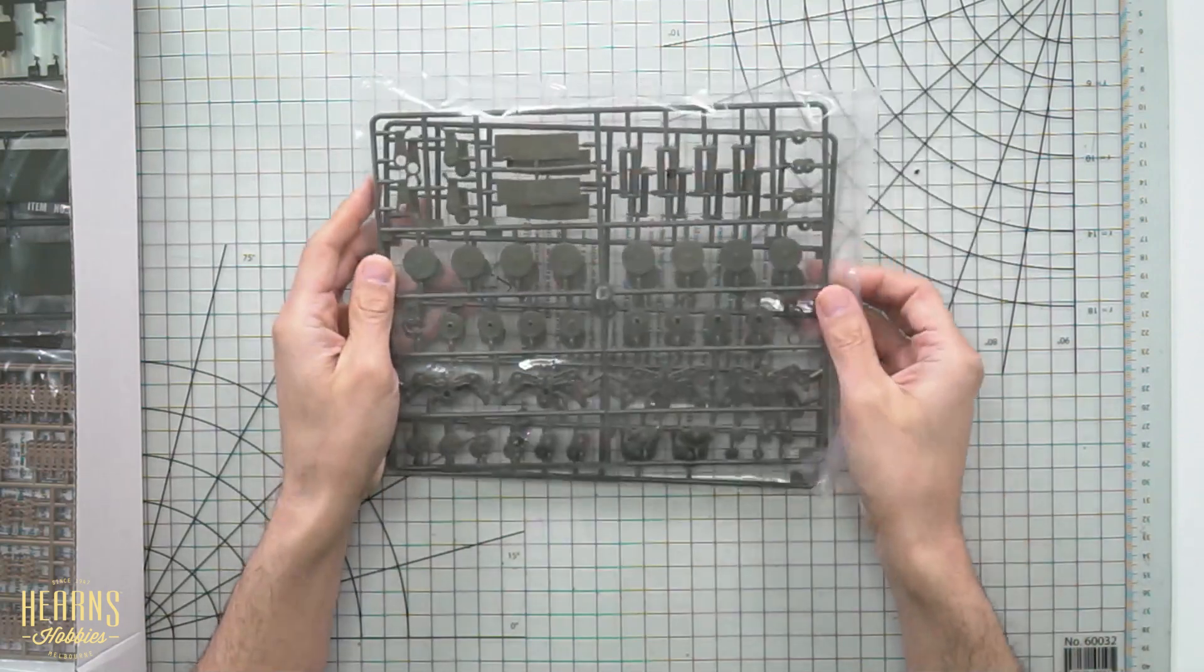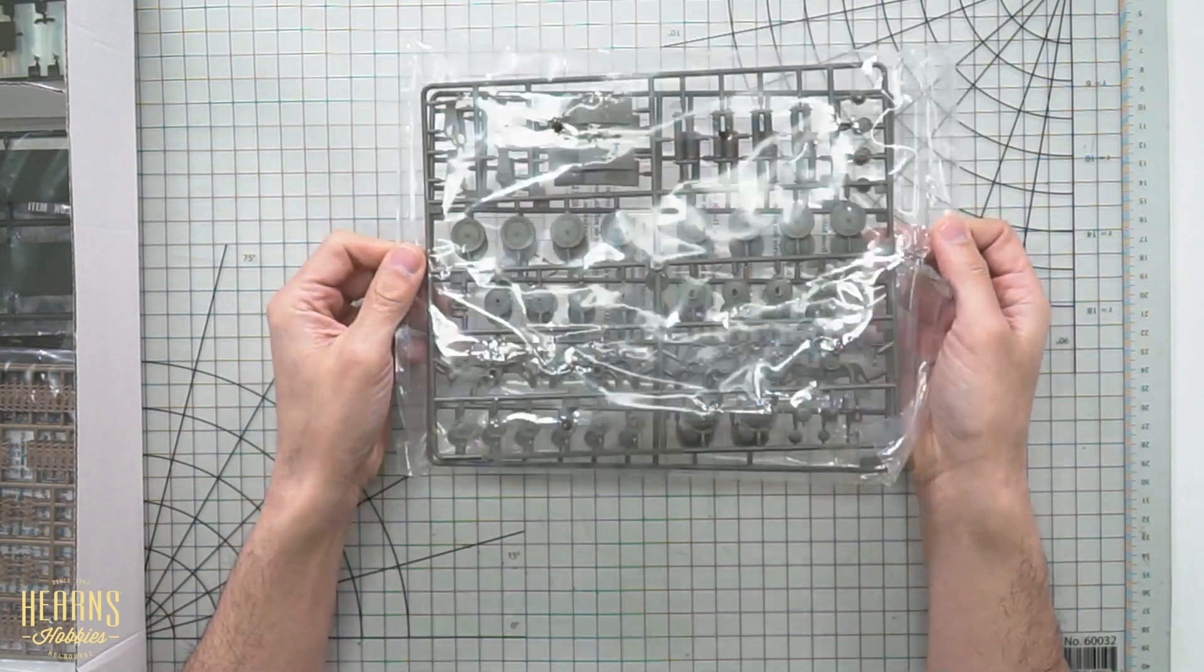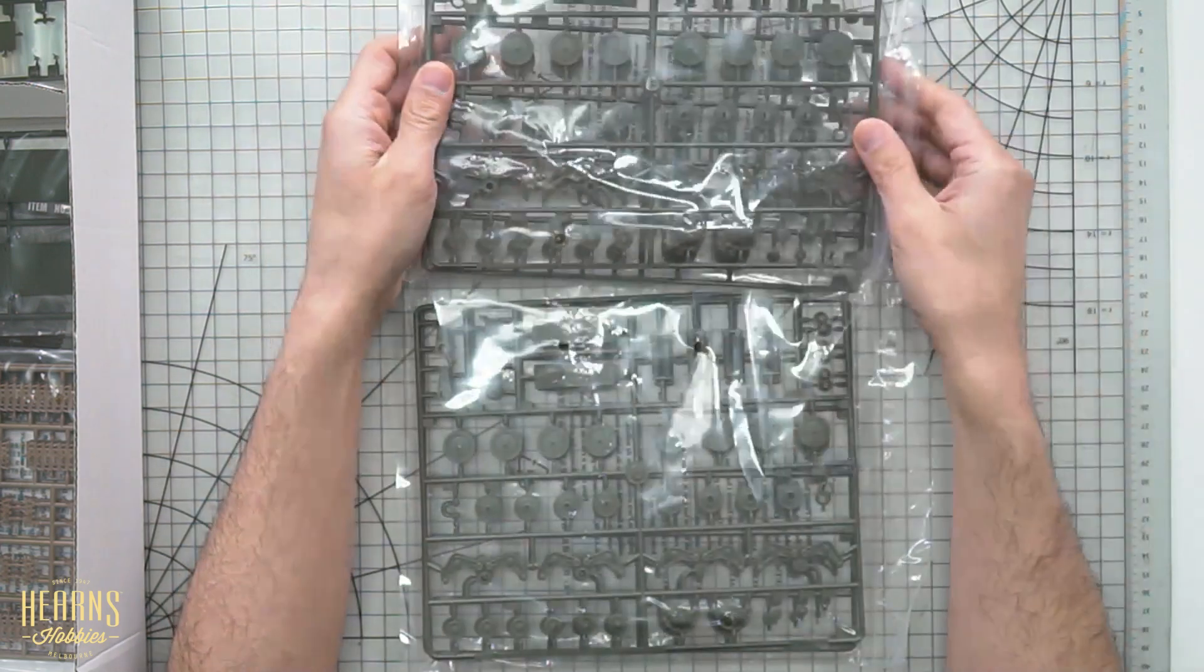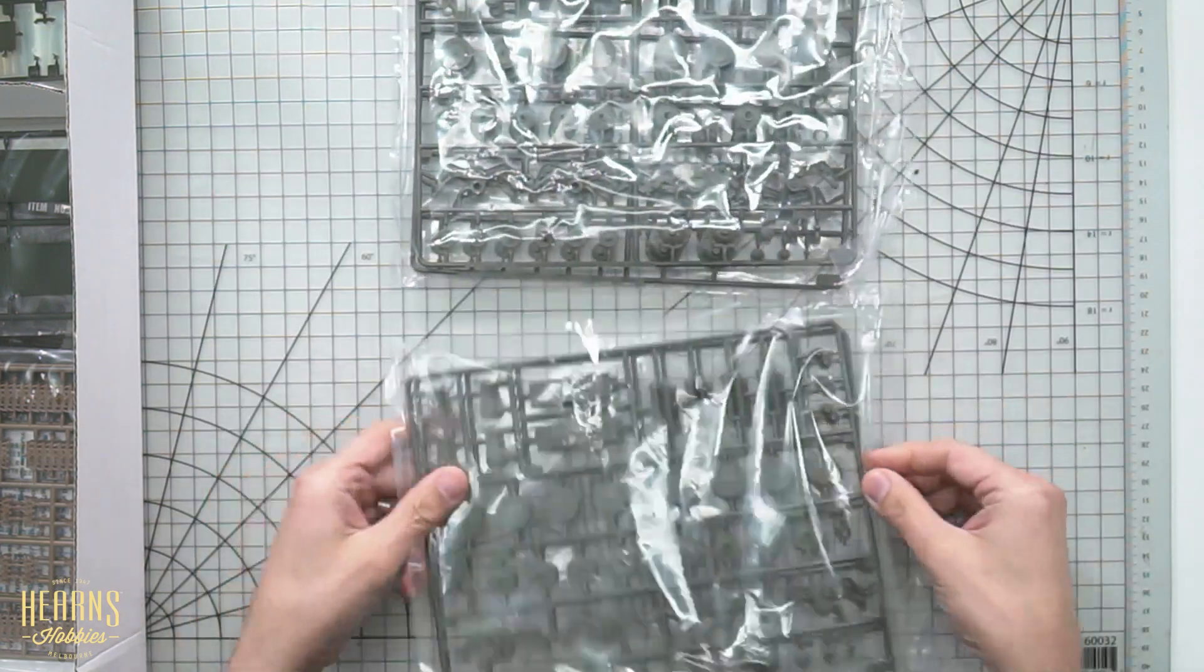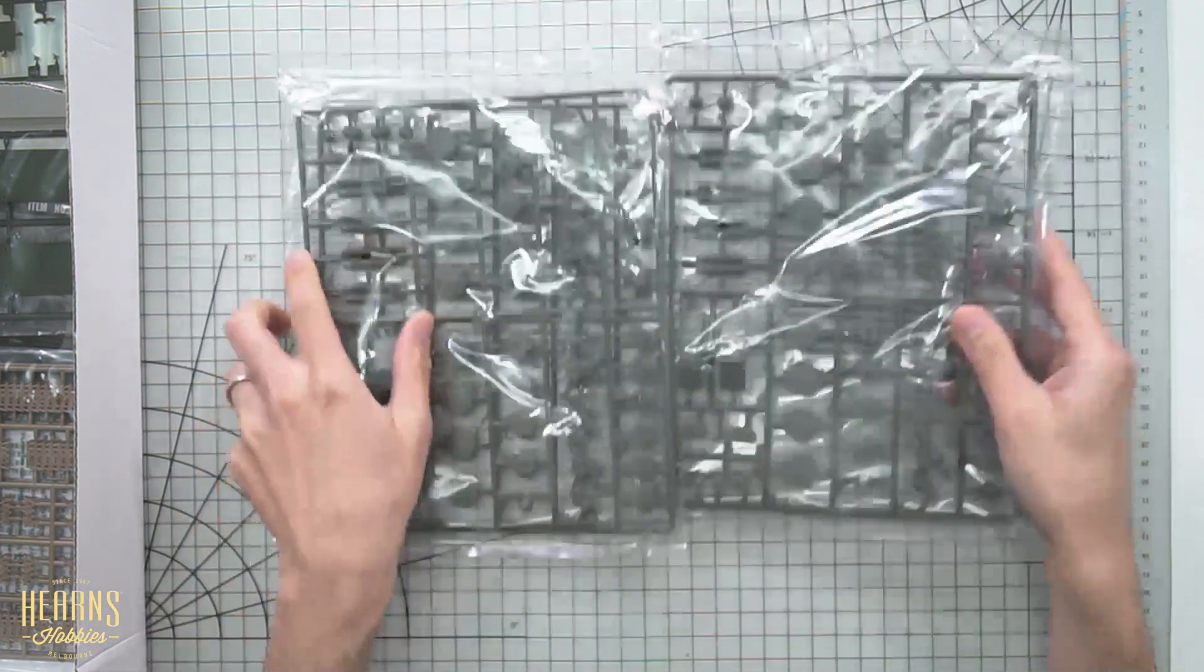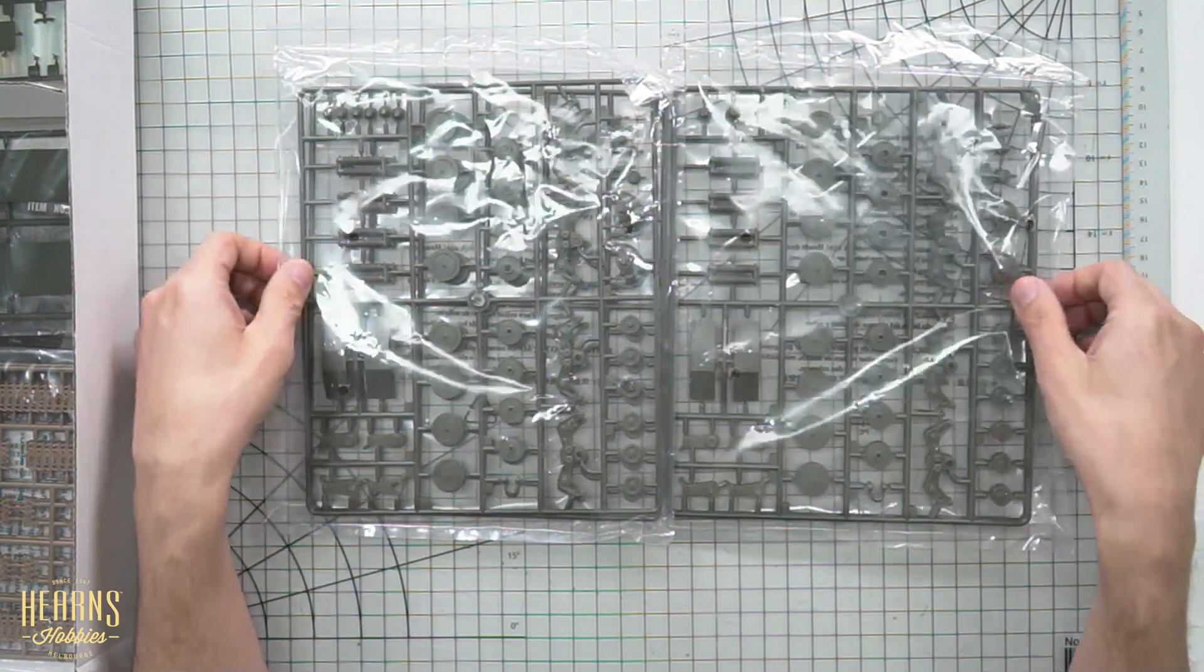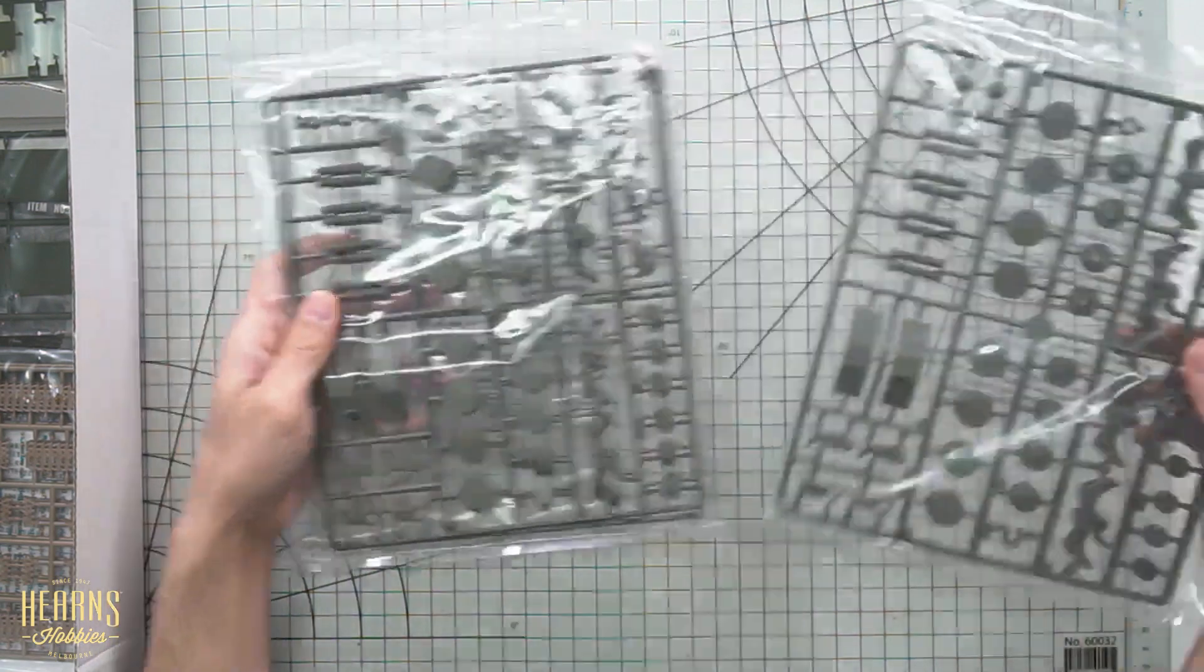So here we have, actually, this is identical to that earlier packet I had. So this gives you an idea of how much component is needed for the suspension. So you've got four identical sprues here to make up the suspension.